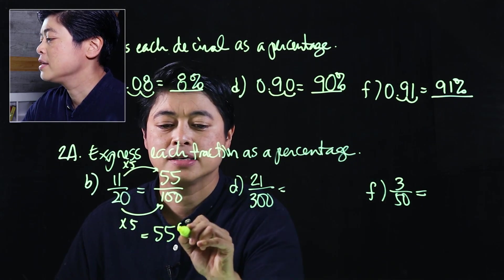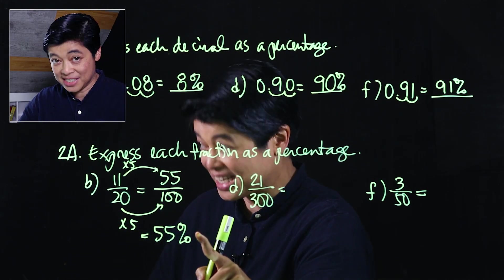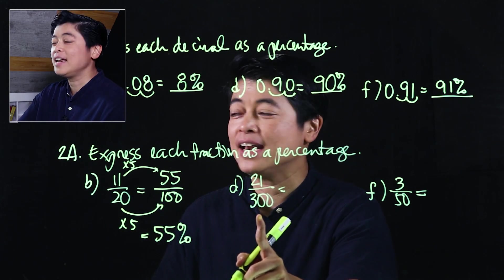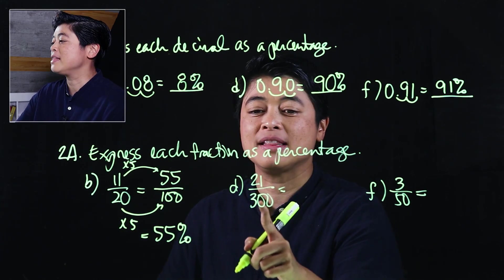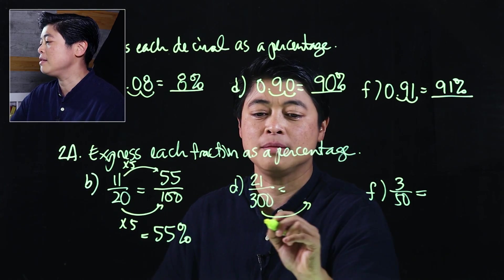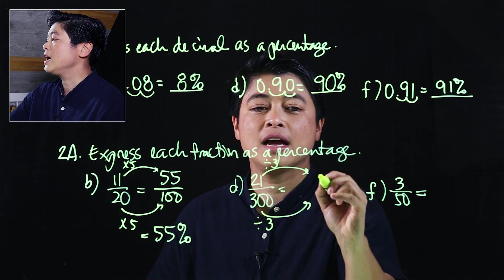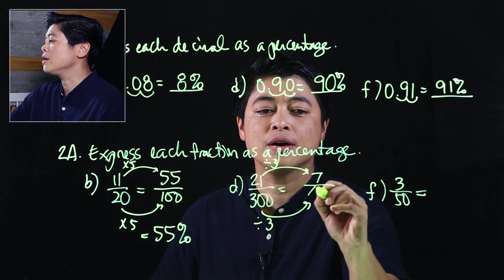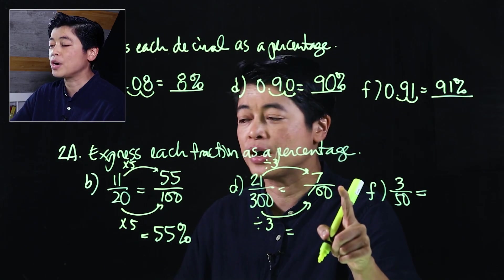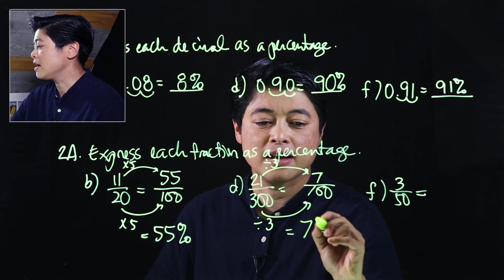If we do this one again, I can easily make the 300 be 100 - all I have to do is divide by 3. So if I divide the top by 3, I will get 7 over 100. Again as we read that, that's 7 per 100, which is 7 percent.